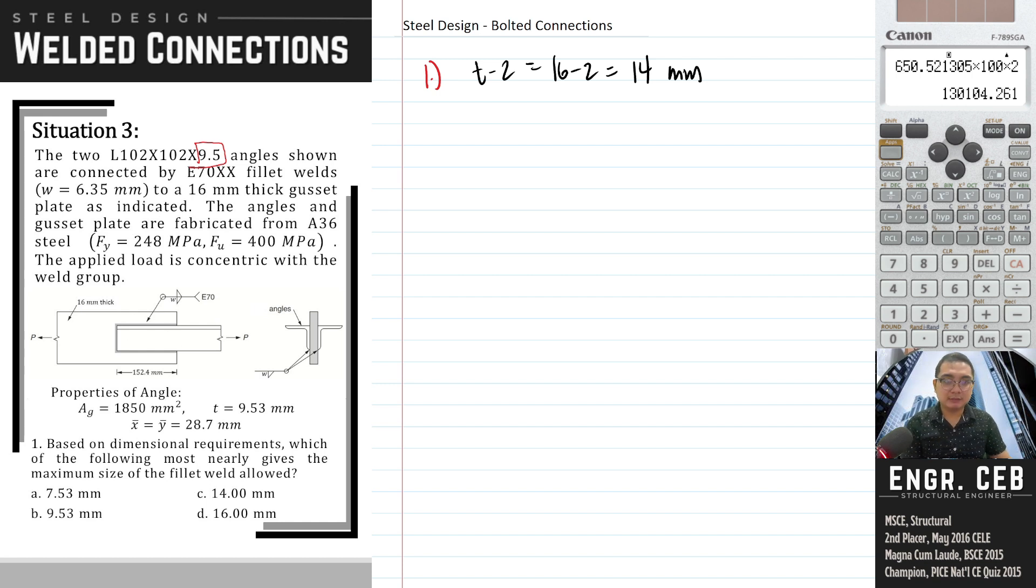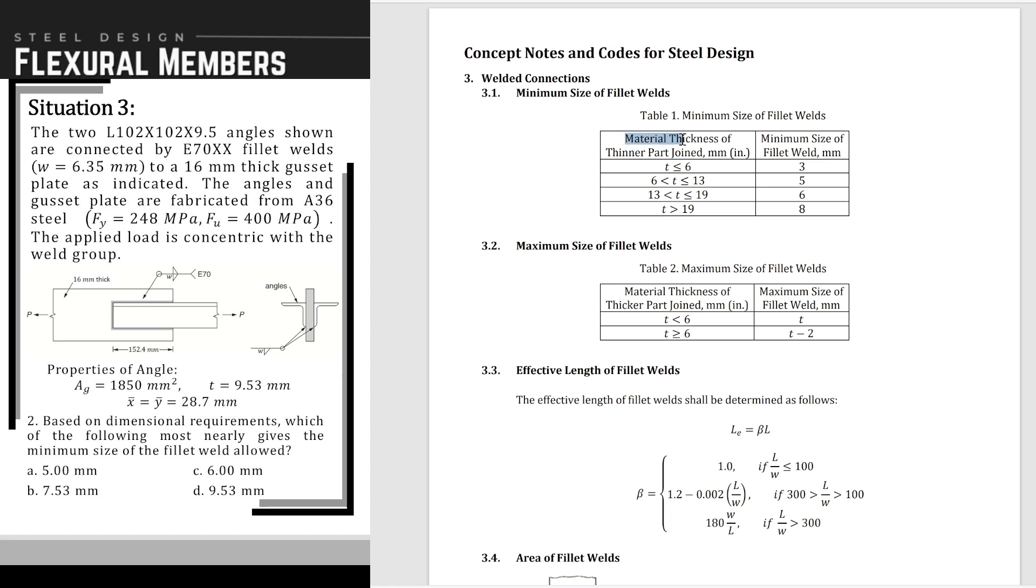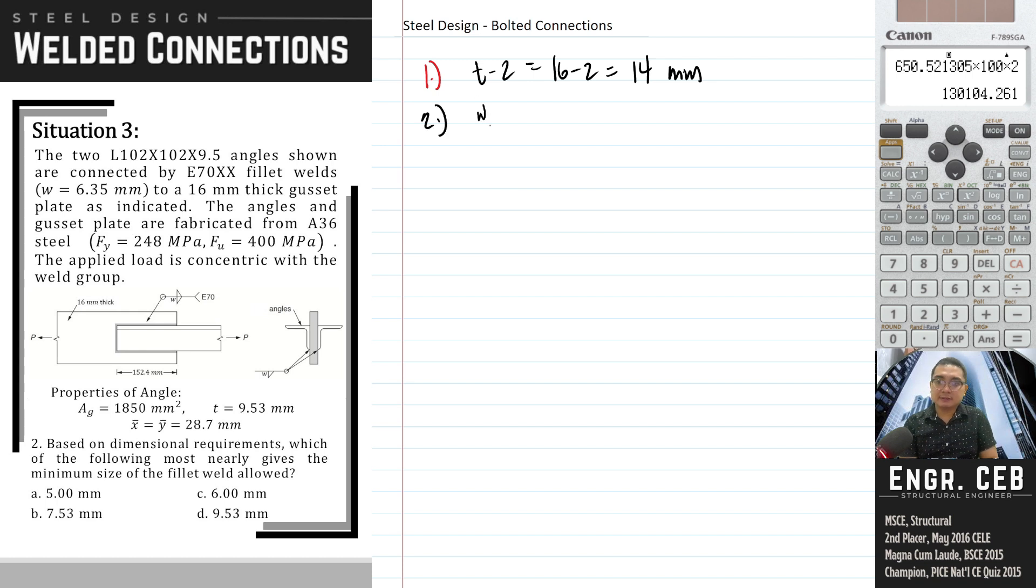Next, based on the dimensional requirements, which of the following most nearly gives the minimum size of the fillet weld allowed? For minimum, we look here. Minimum is based on material thickness of thinner part joint, so it's based on the thinner part. If the thicker is the gusset plate at 16, then the thinner is the angle. The thickness is 9.5, so depending on the thickness of the material there's an assigned size of weld. If 9.5 is the thickness of the angle, which one is it in these four? It's in between 6 and 13, so therefore the corresponding minimum size is 5 millimeters. That is letter A.